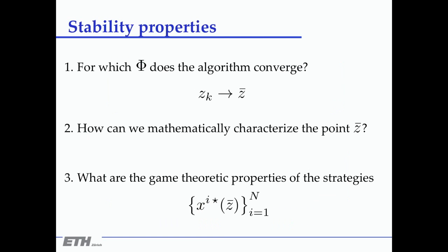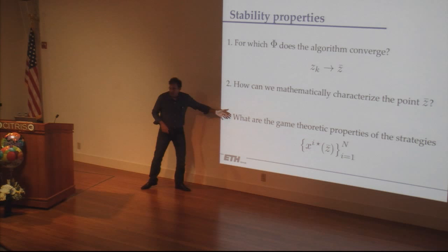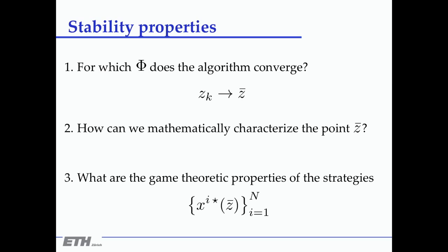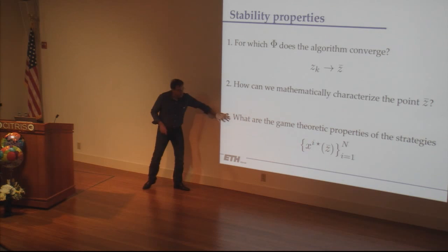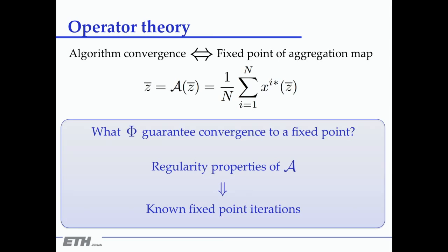The question is: will this algorithm converge? How should you select this feedback map φ to get convergence? What will they converge to? What are the properties of this fixed point? And if you see it as a game between them, what are the game-theoretic properties of the individual responses at this optimal signal?